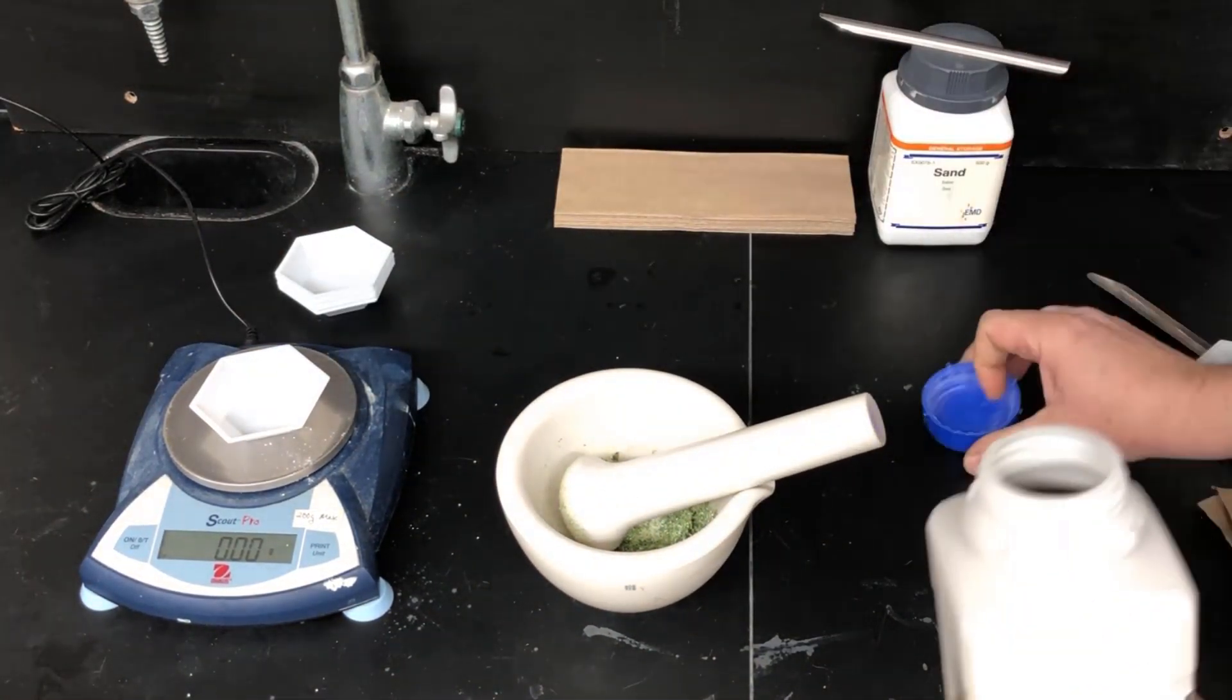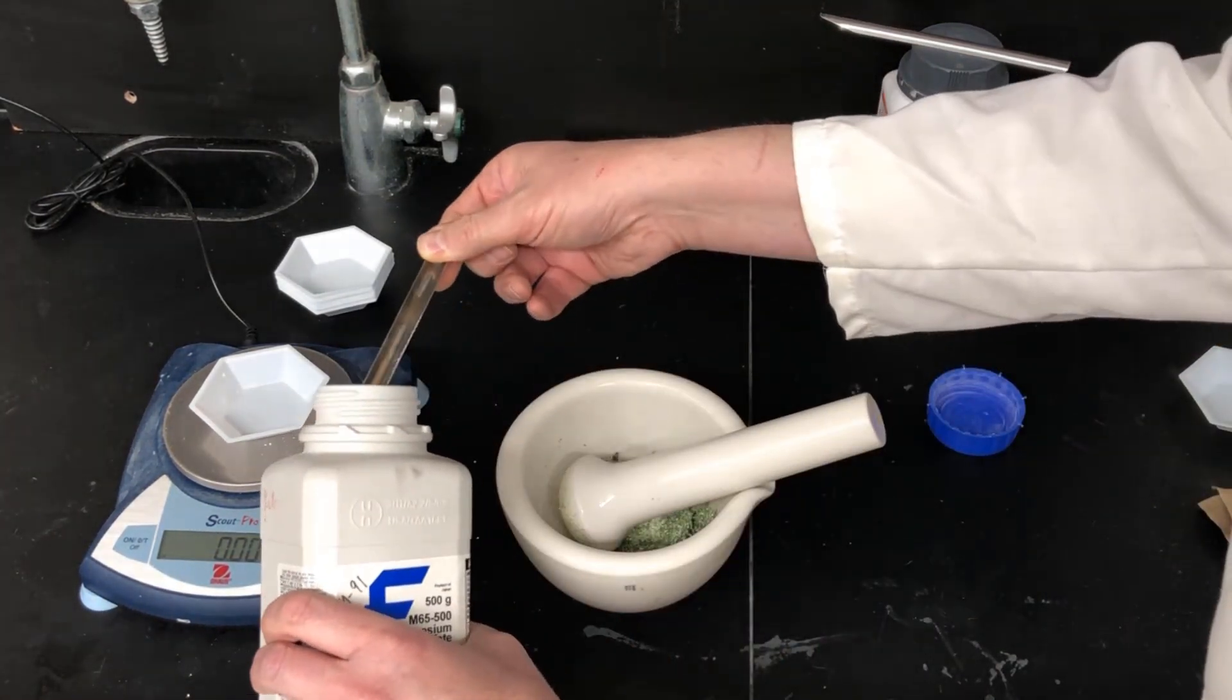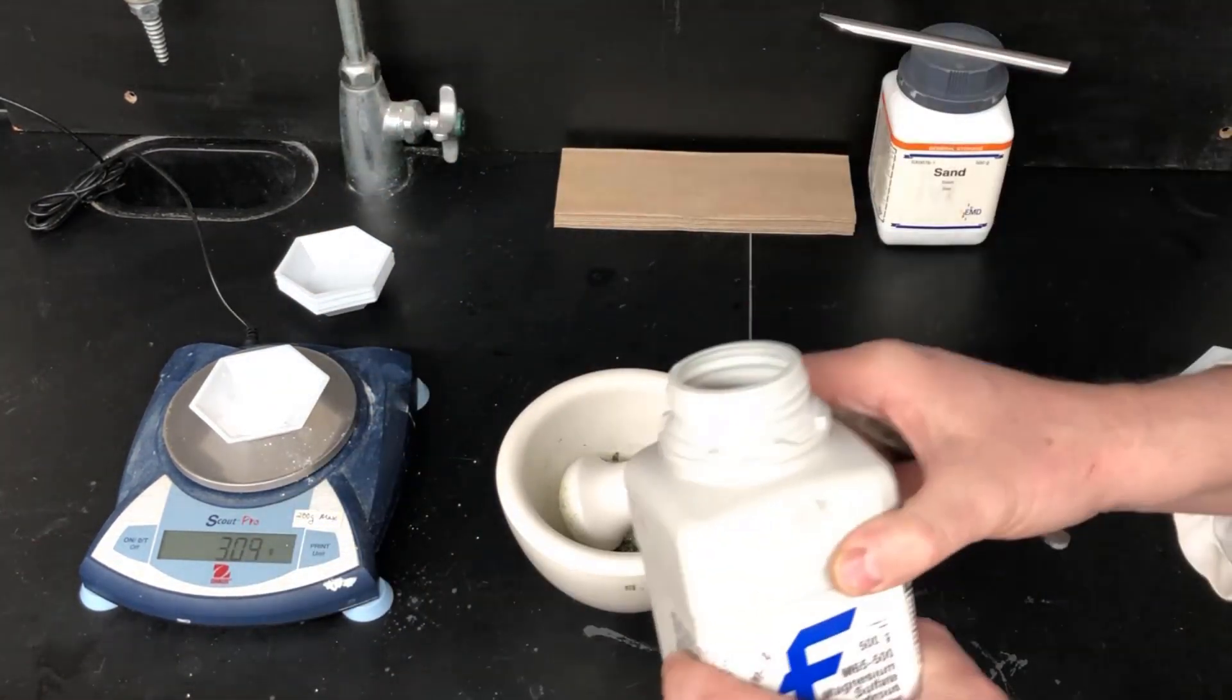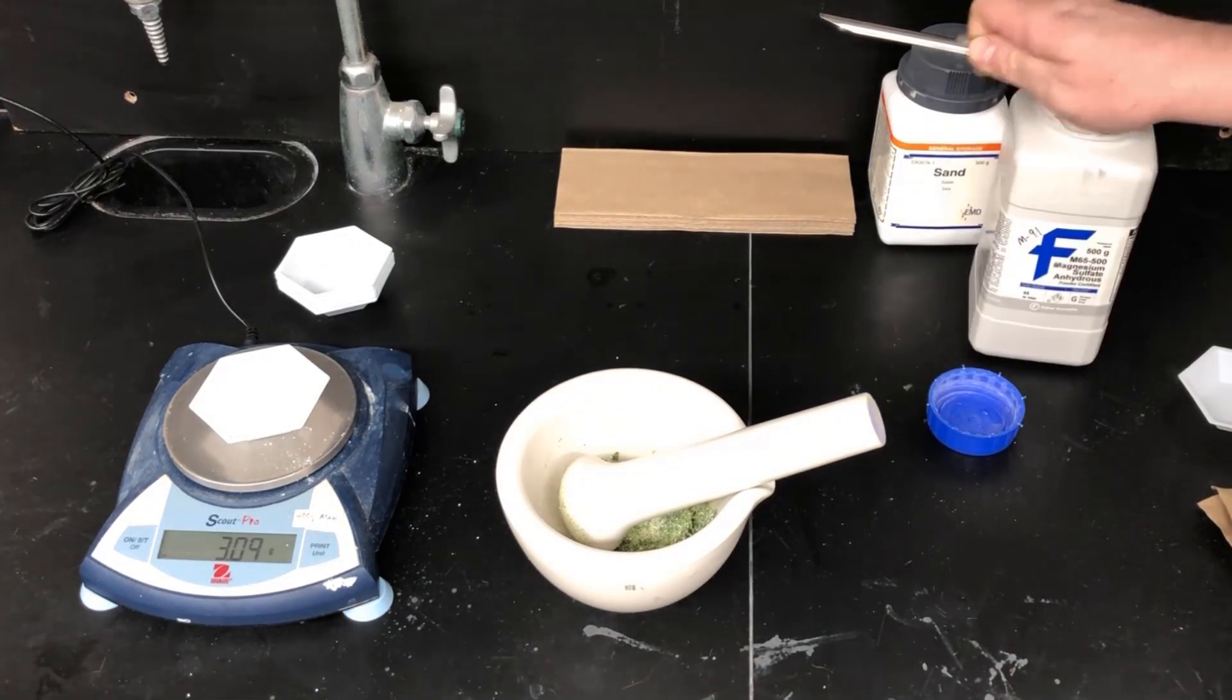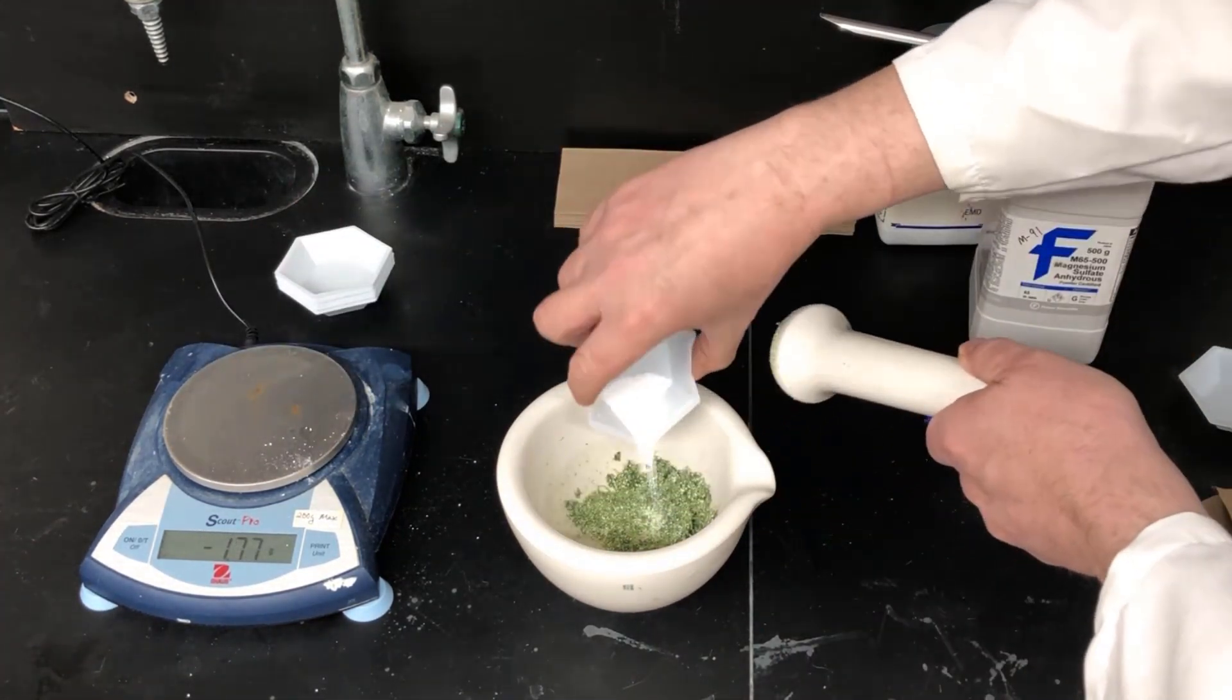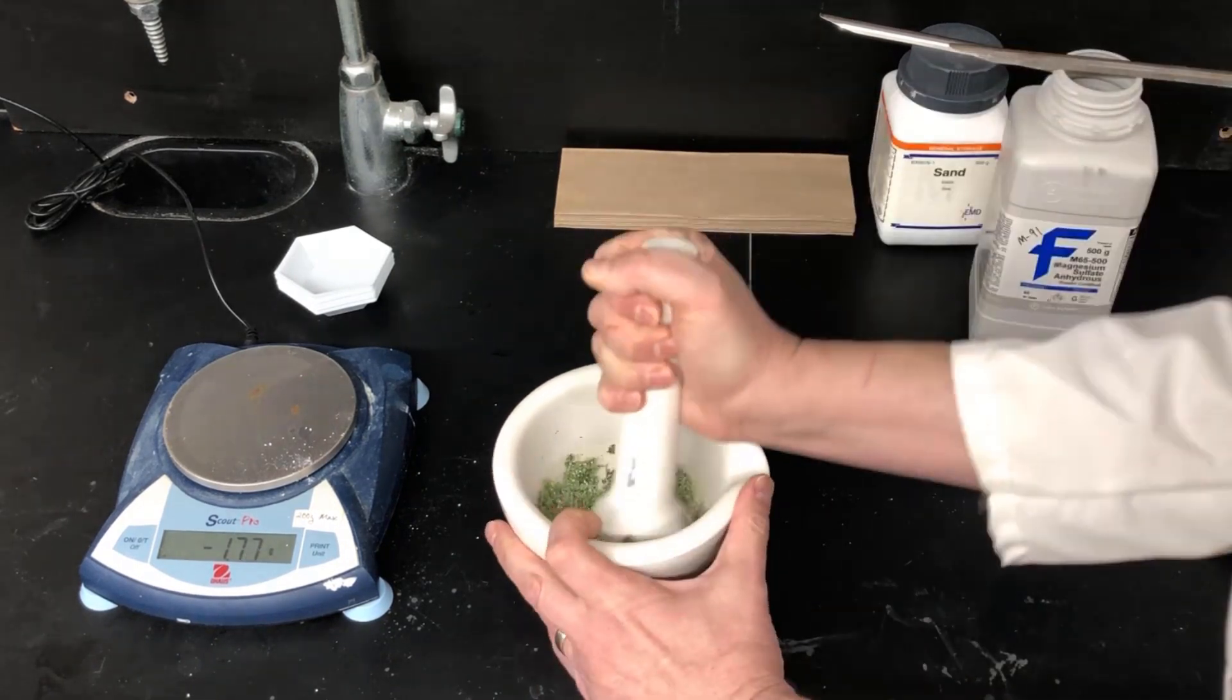So I'm going to weigh out some more magnesium sulfate, some more drying agent to try to improve the flow of that material so it is really a bit drier. So it's another about three grams, and I add that there and then continue grinding.